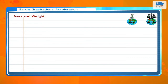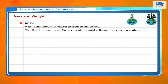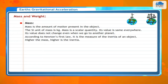Mass and Weight. Mass is the amount of matter present in an object. The SI unit of mass is kg. Mass is a scalar quantity — its value is the same everywhere and does not change even when we go to another planet. According to Newton's first law, mass is the measure of the inertia of an object: the higher the mass, the higher the inertia.